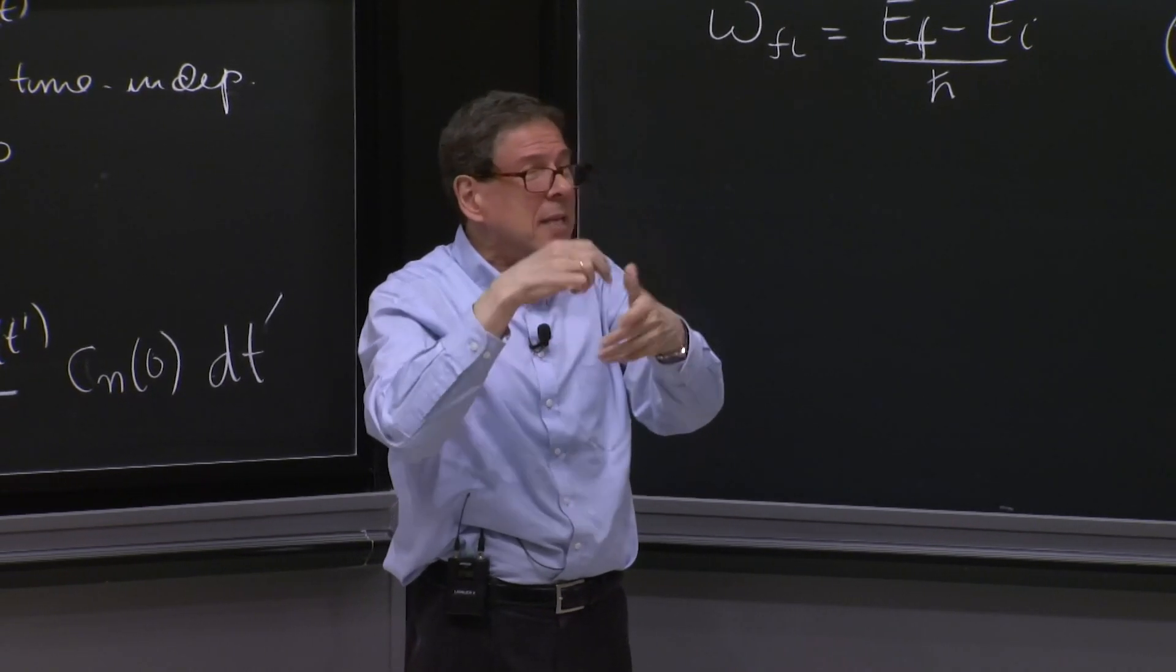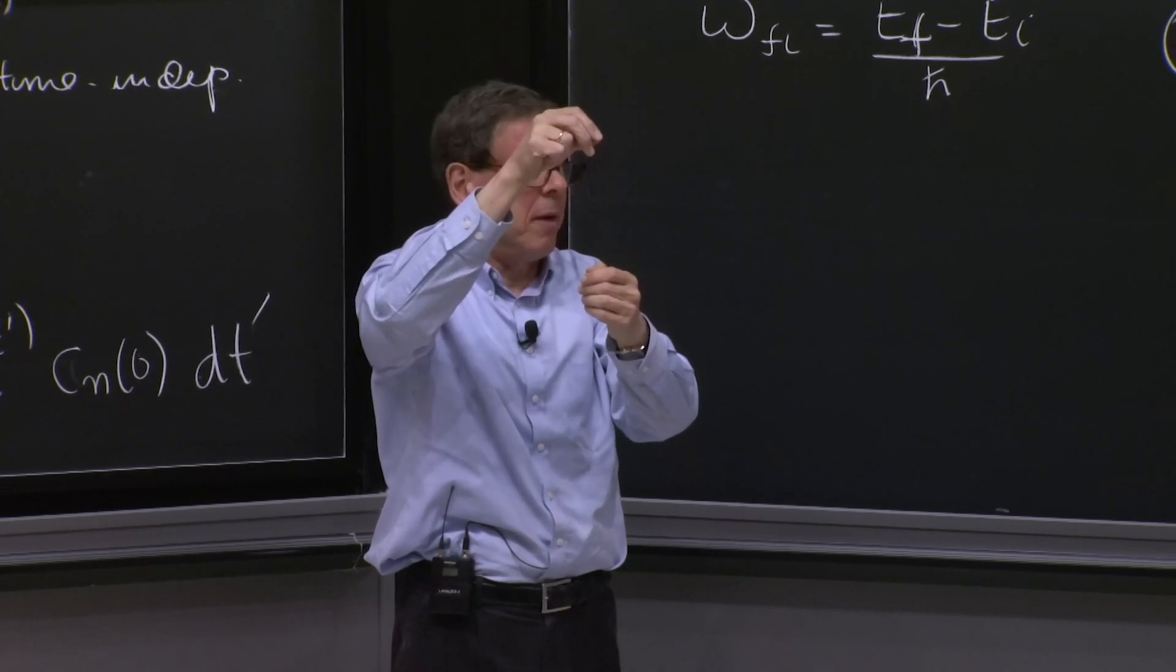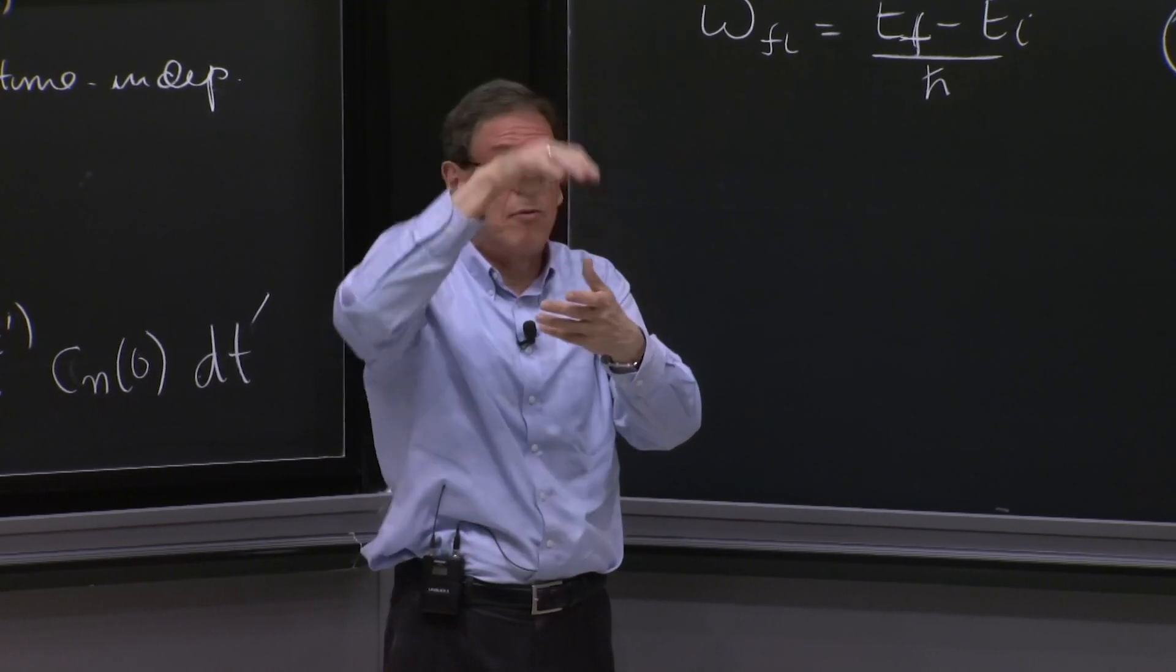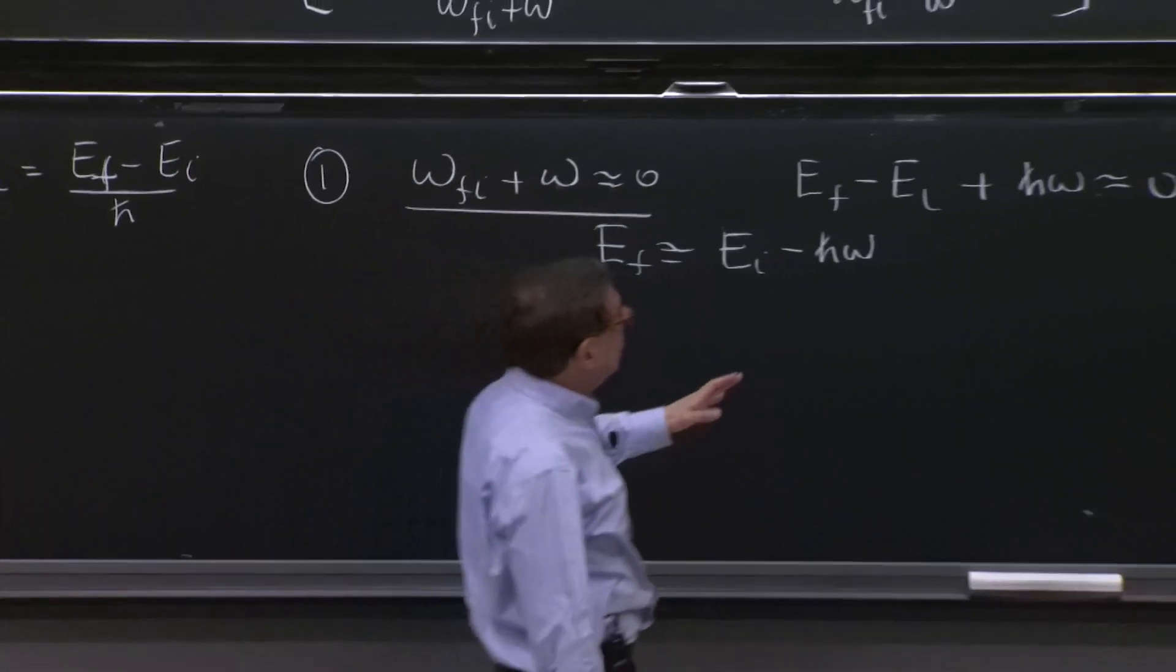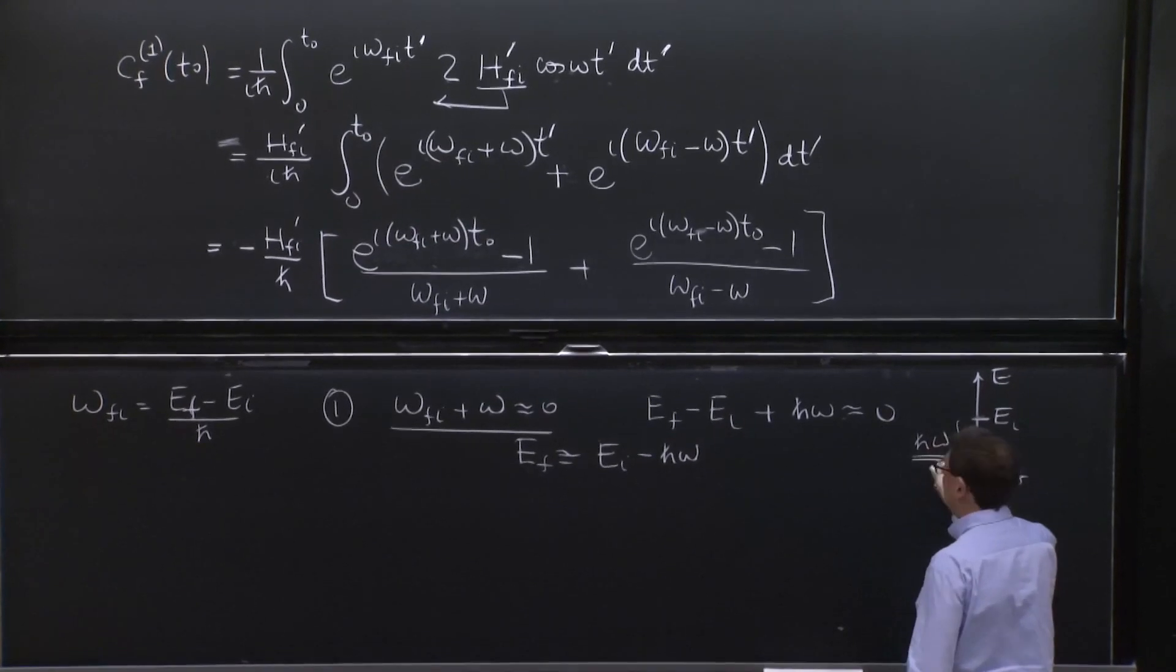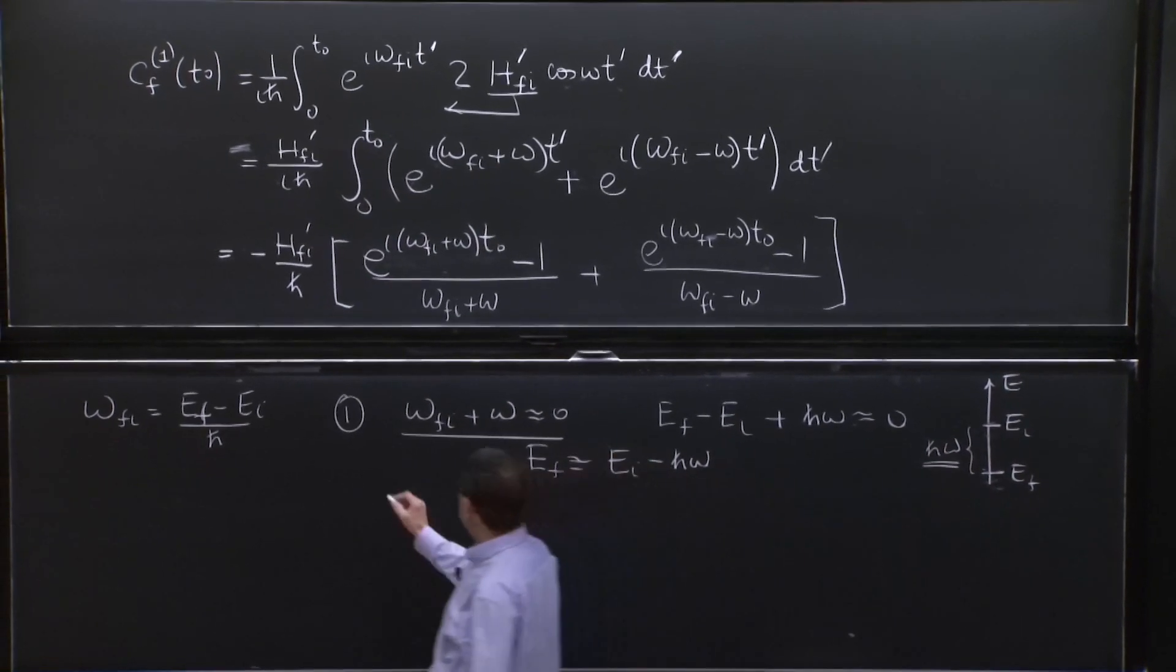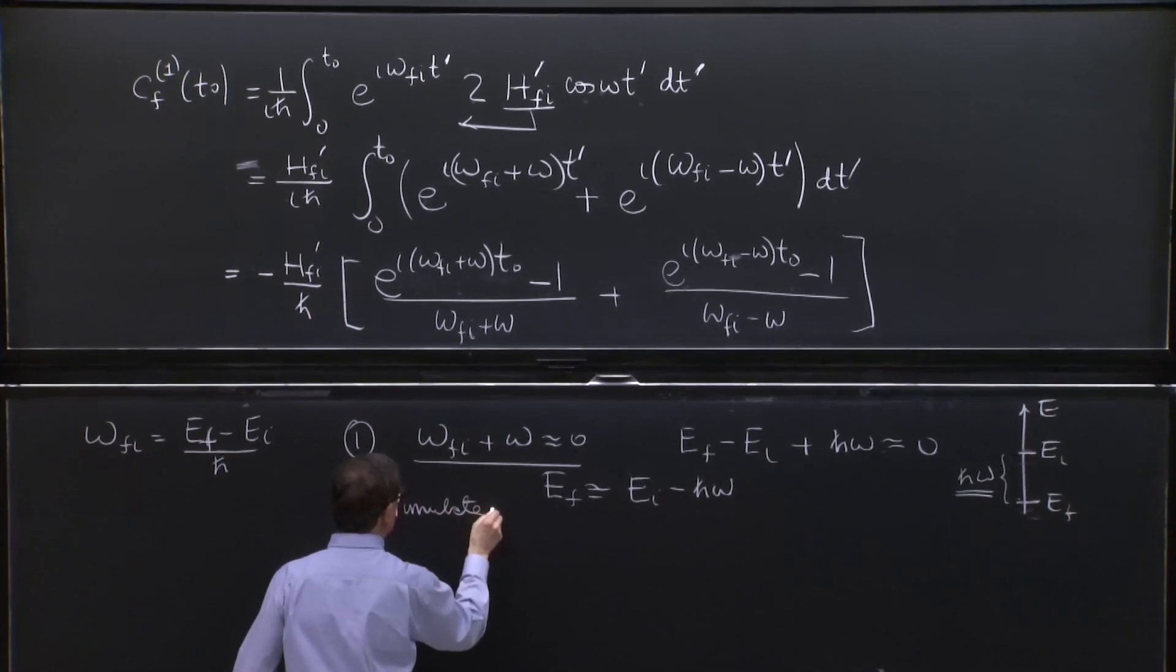It jumps by itself out because it can couple to other degrees of freedom. And in particular, it can couple to an electromagnetic field and send out the photon. So here, you have stimulated emission of energy h bar omega.